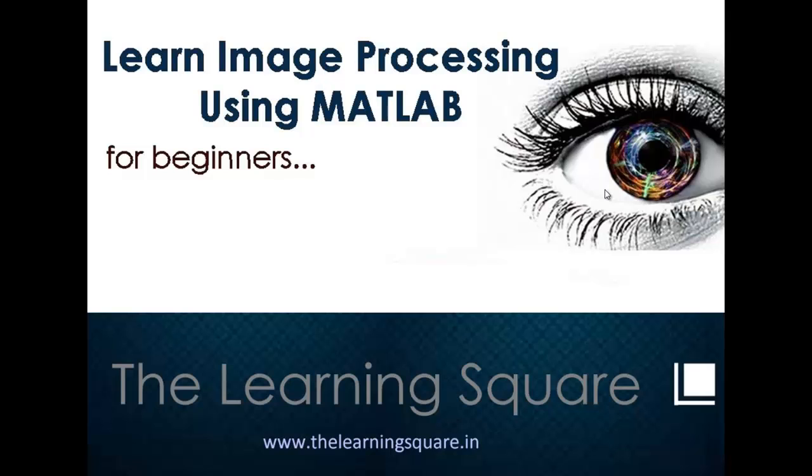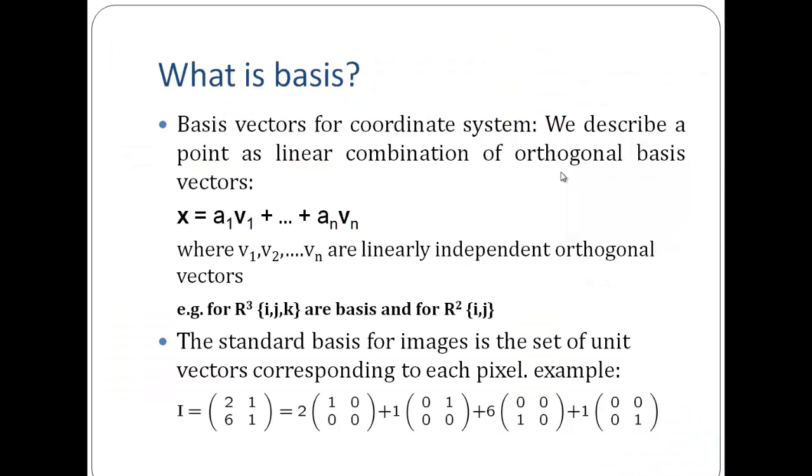Hello and welcome to learn image processing using MATLAB for beginners. For the Fourier transformations, we discuss what are the basis vectors. So suppose I have a vector in the two-dimensional coordinate system. I can represent it as a combination of i and j unit vectors along the x and y direction.